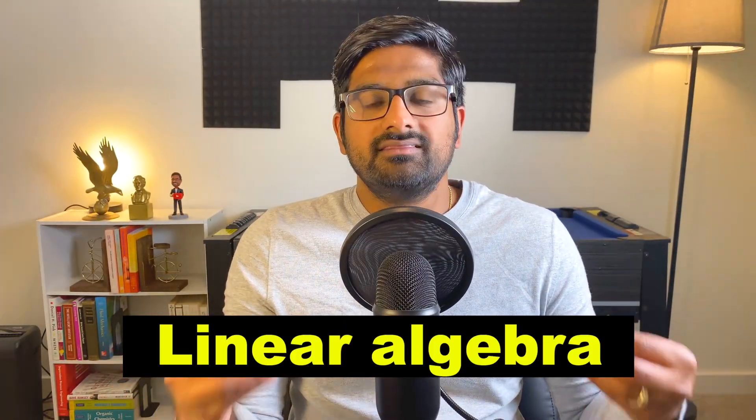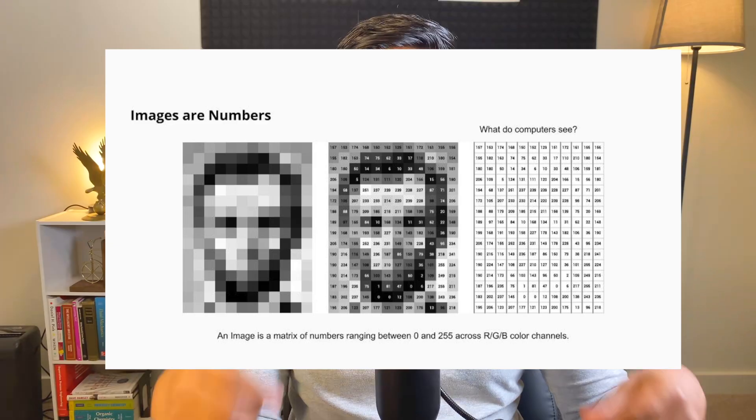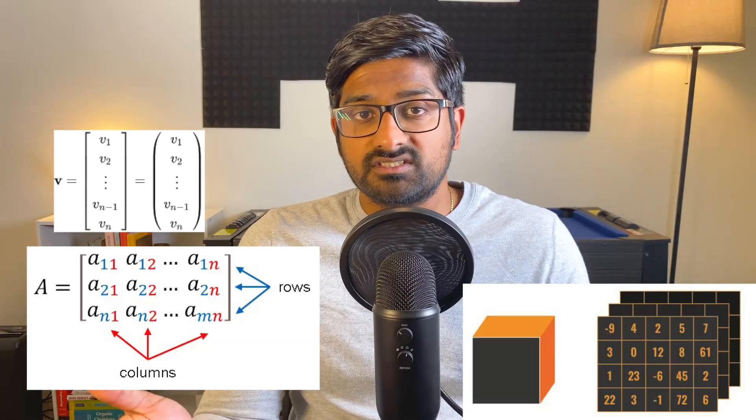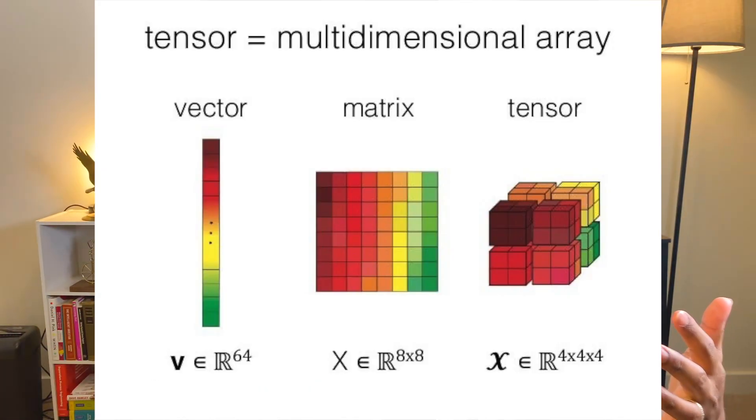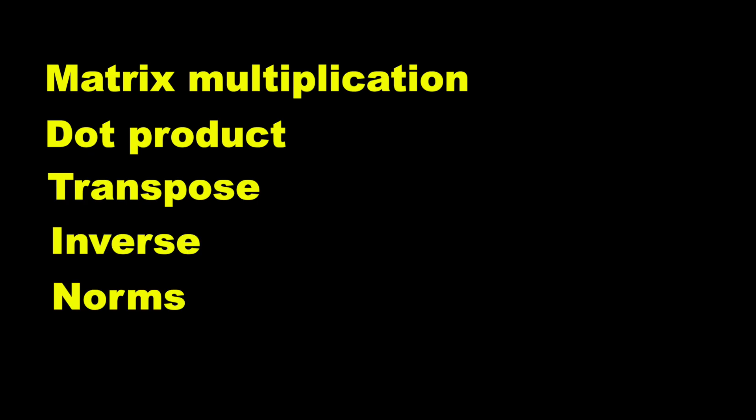The first set of concepts you need to learn involve linear algebra. This is very important because machines or computers learn only through numbers. Unlike us, they cannot understand images, text, or any other type of data — they all need to be transformed into numbers. So this involves representing data as vectors, matrices, or tensors. Tensors are simply three-dimensional sets of numbers that look similar to a matrix but with a third dimension. In linear algebra you need to learn about different types of matrix operations, including things like matrix multiplication, dot product, transpose, inverse, and norms.